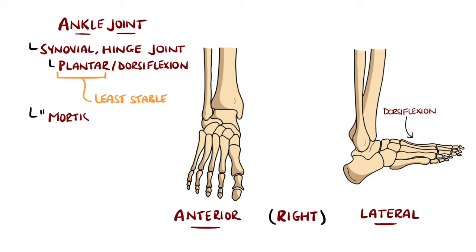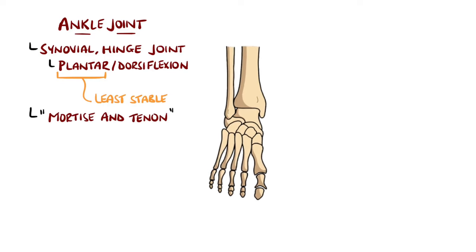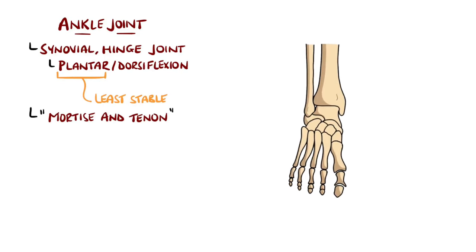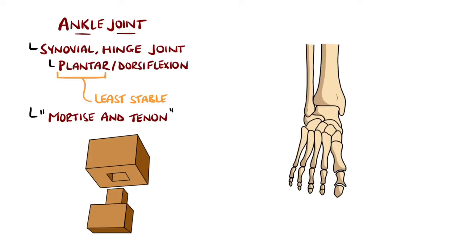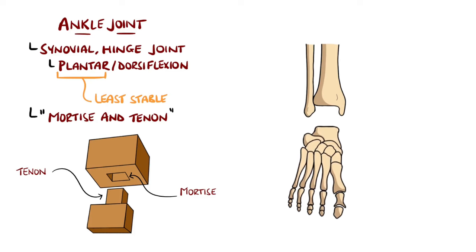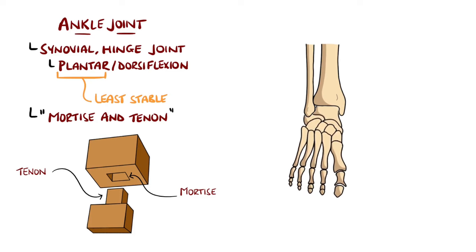It is described as a mortise and tenon joint, which are essentially a hole and a projection that fits that hole — in this case, the space formed by the tibia and fibula, and the projection which is the dome of the talus bone.